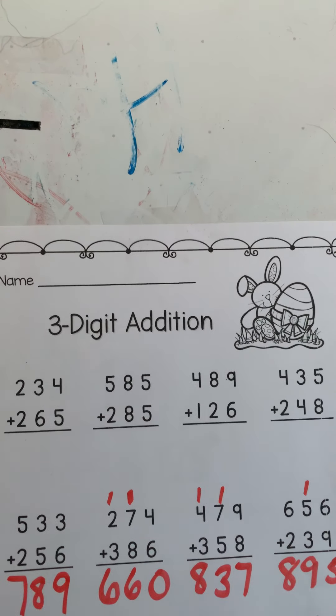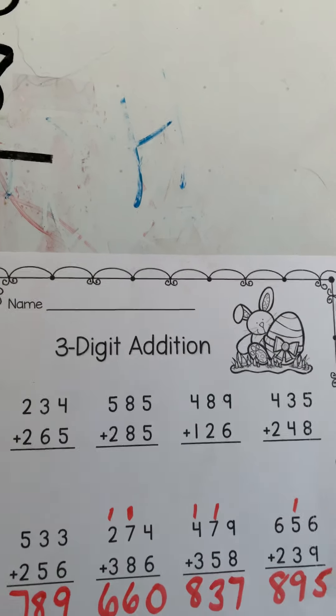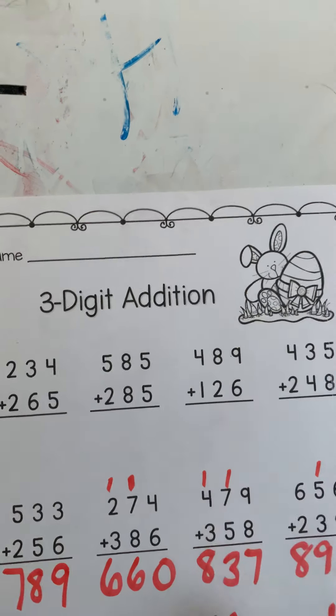I'm so proud of how hard you're working this week. Let's see if you remember how to add. We're going to do some three-digit addition. It's part of those Easter printables Mrs. Masco gave you earlier this week.